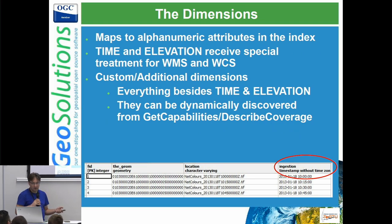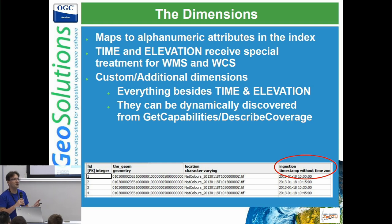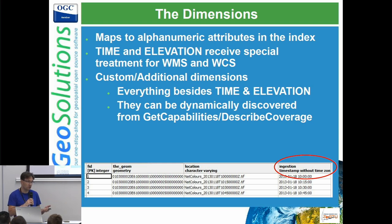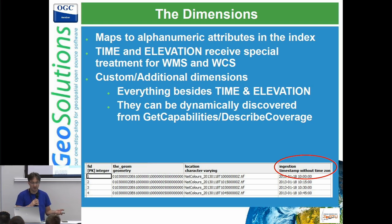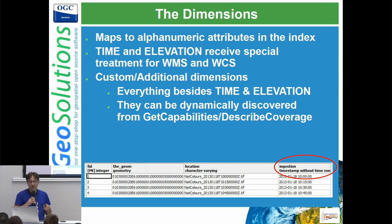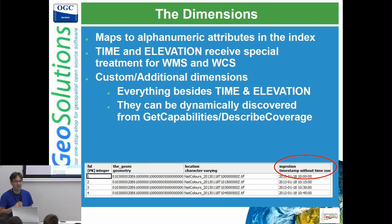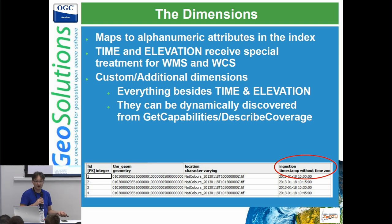Many of the attributes are used for search, and in particular, time and elevation are well-known search parameters in the WMS and WMTS protocols. You can use them to quickly locate the data at a particular point in time. Any other attribute can be used as a custom dimension — for example, filtering by wavelength, or by runtime if you're talking about a weather forecast, like when the prediction was run.